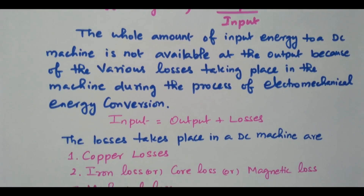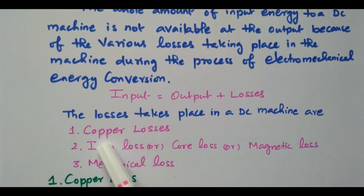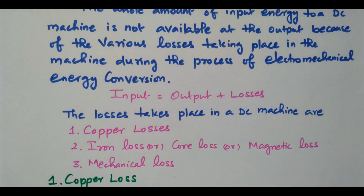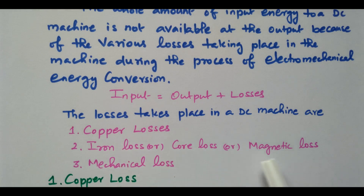What are the losses available in DC machines? One is the copper loss, because copper windings are available. Losses also take place in the magnetic core, which is called iron loss, core loss, or magnetic loss. Then we have mechanical losses due to friction and windage — some losses will occur, and that is called mechanical loss.